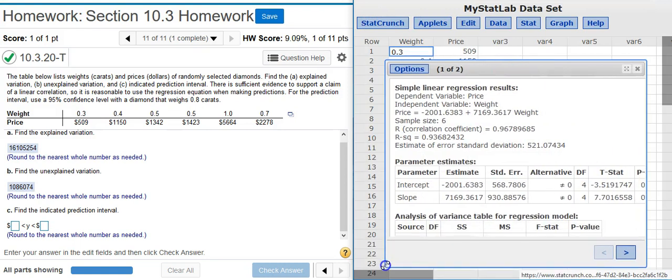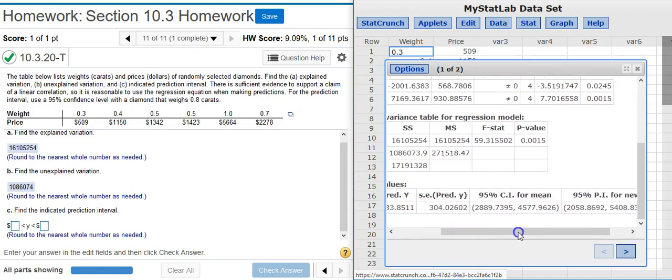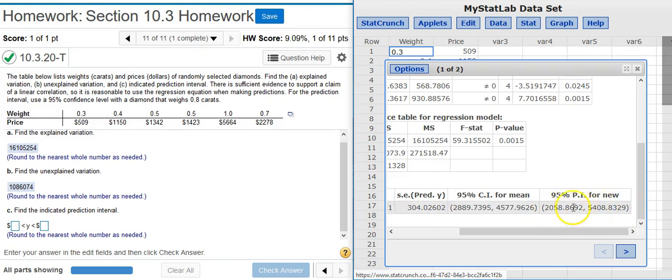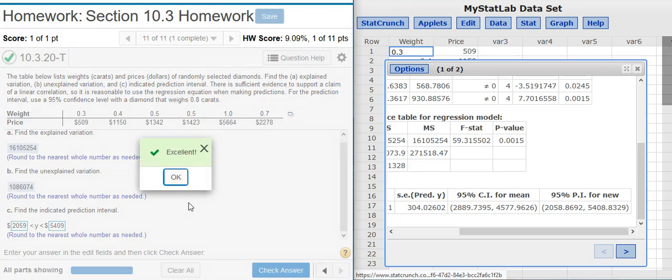And then, here in my results window, if I scroll down to the bottom, here's an area entitled predicted values. And in that table, there at the very end, is my prediction interval. So, I'm going to go in and again, we're asked to round to the nearest whole number as needed. Excellent!